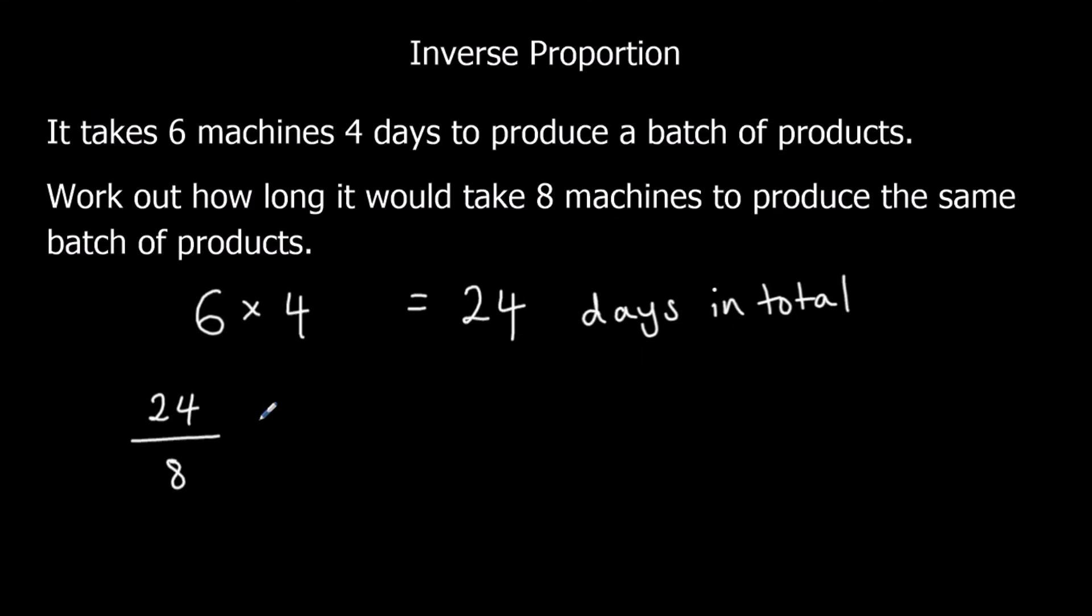So 24 over 8, and that is 3 days. So 3 days is how long it takes 8 machines to produce the same batch of products.